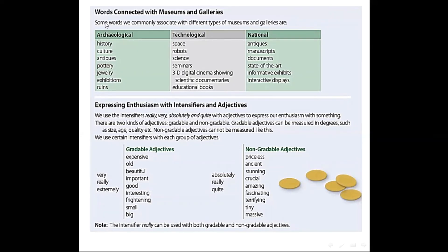Now, we will point out some words connected with museums and galleries. Some words we commonly associate with different types of museums and galleries. It's divided into three categories: archaeological, technological, and national. For archaeological, there are history, culture, antiques, pottery, jewelry, exhibitions, and drawings. These words are concerning with archaeological museums.